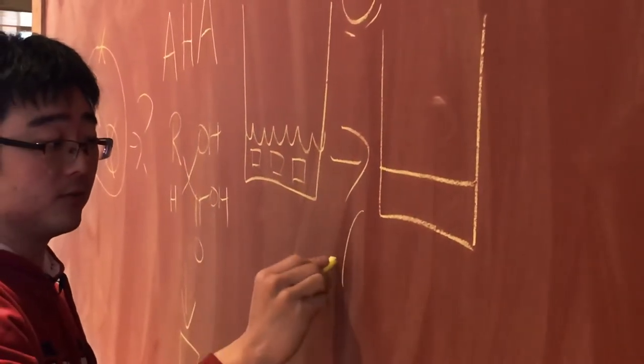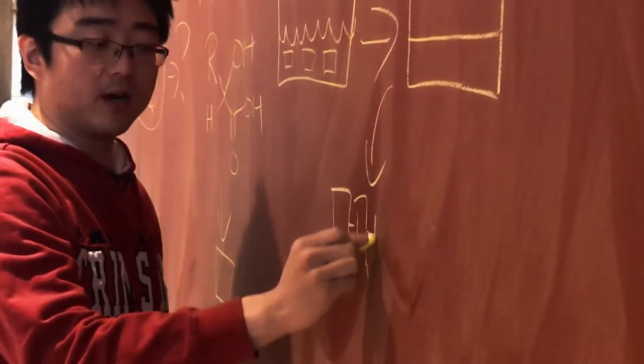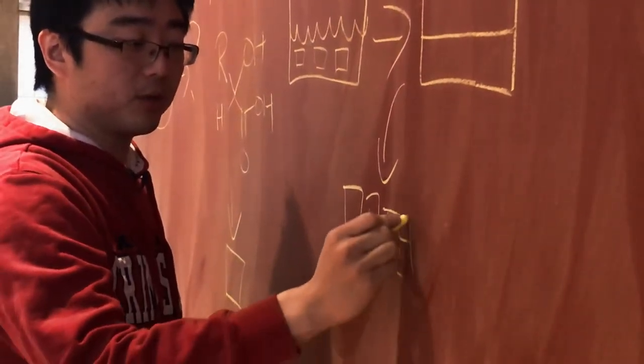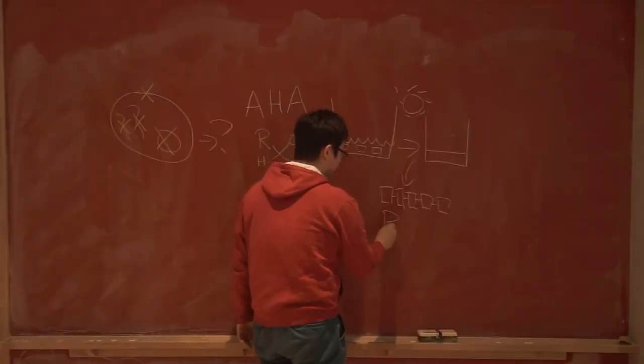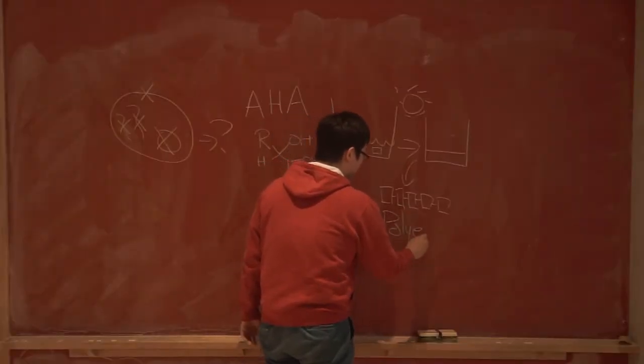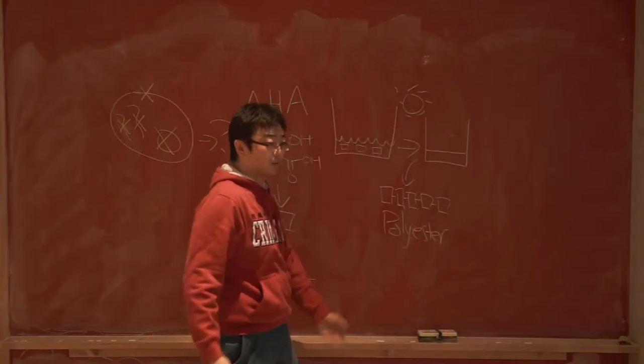And what the gel is made of is actually something like this. The alpha hydroxy acid monomers have polymerized into a polymer and this is called a polyester. And you may have actually heard this term before for example in your clothing.